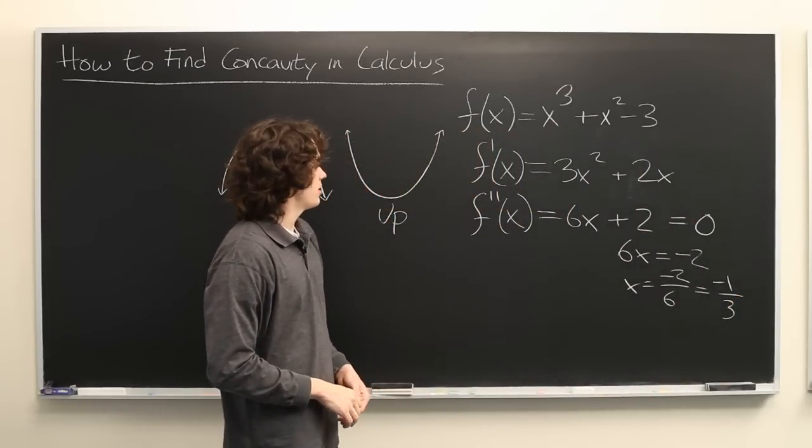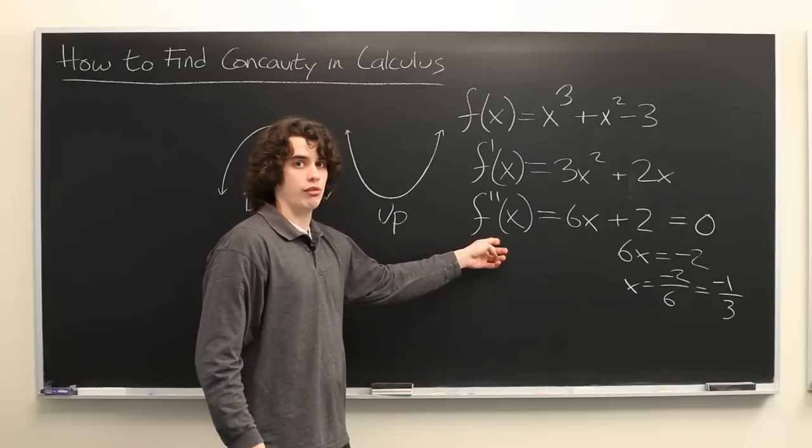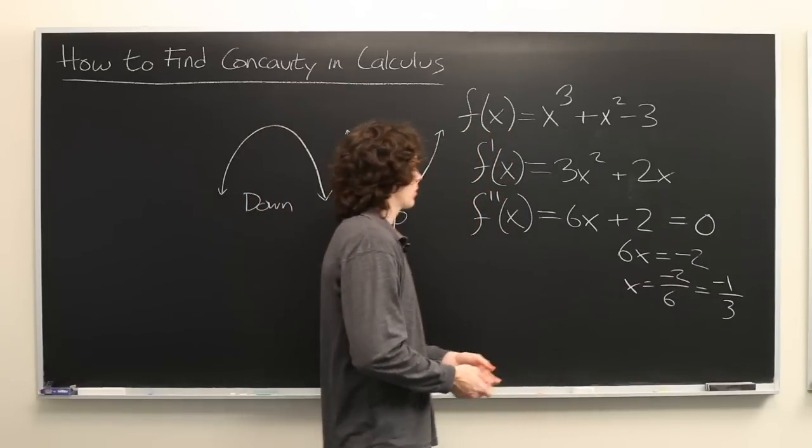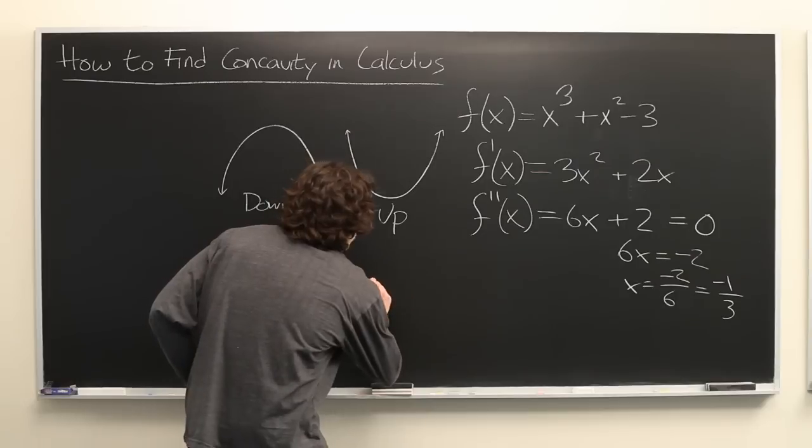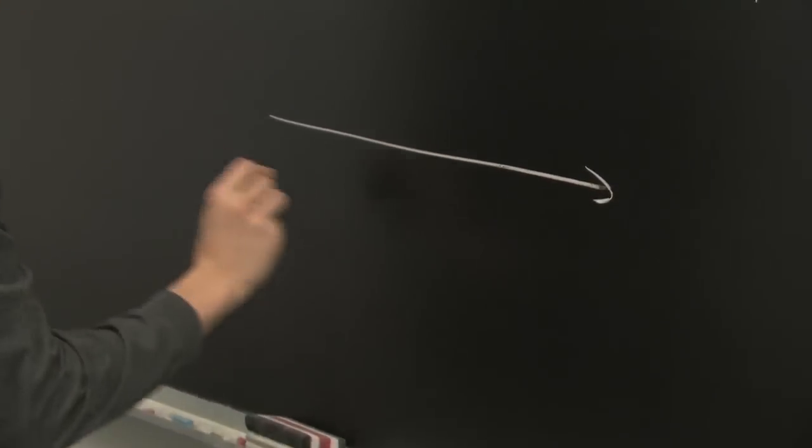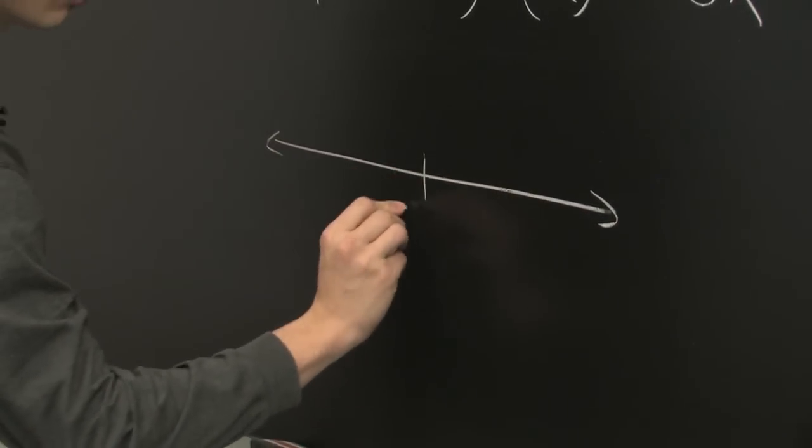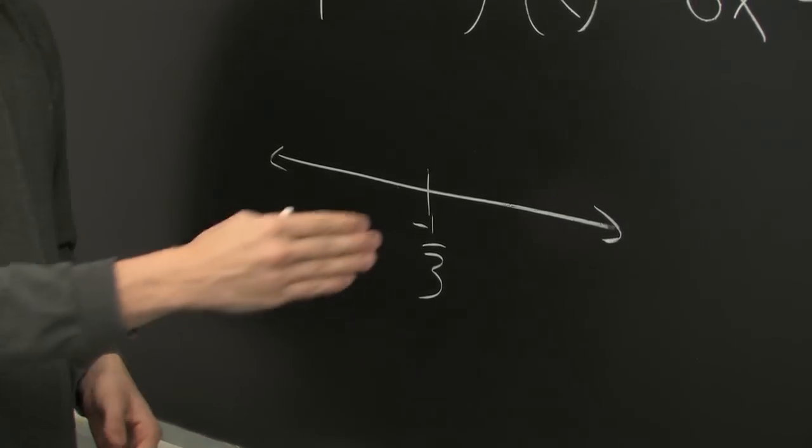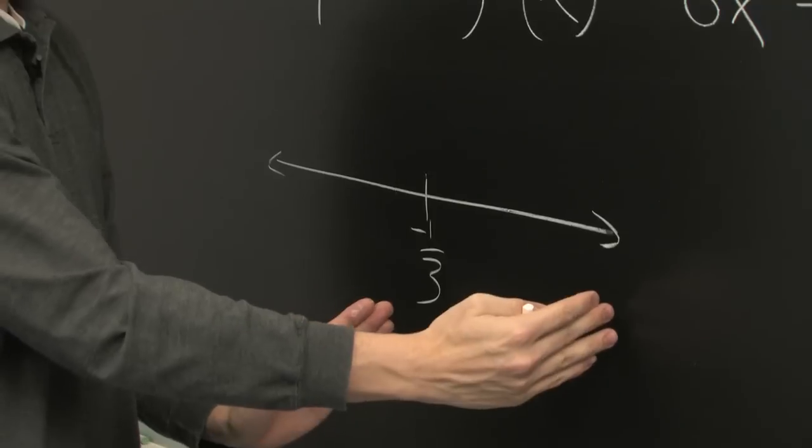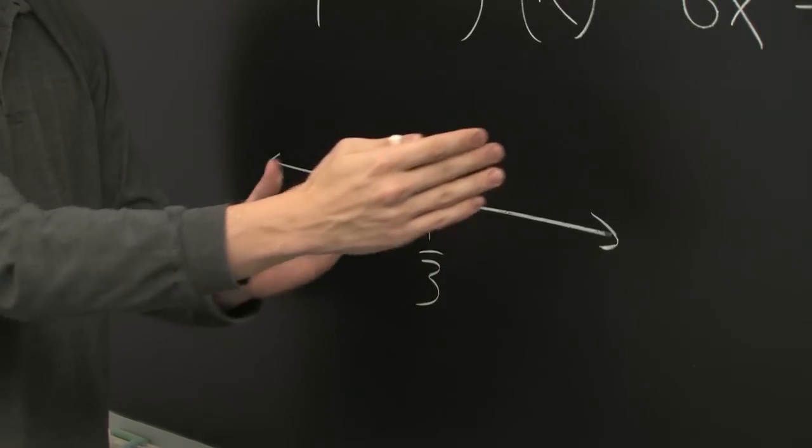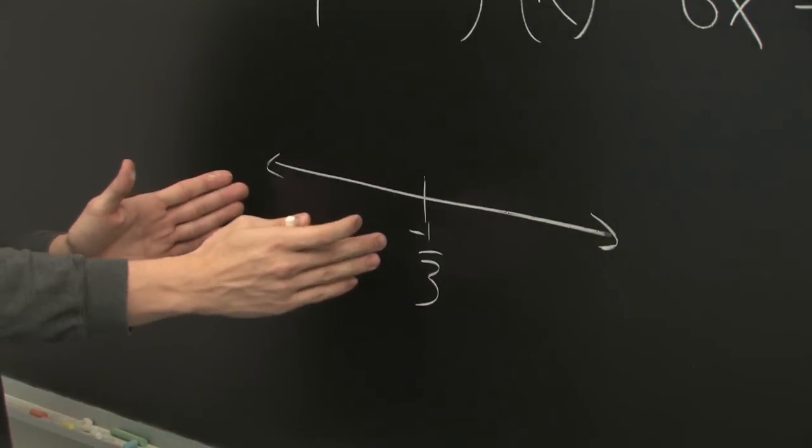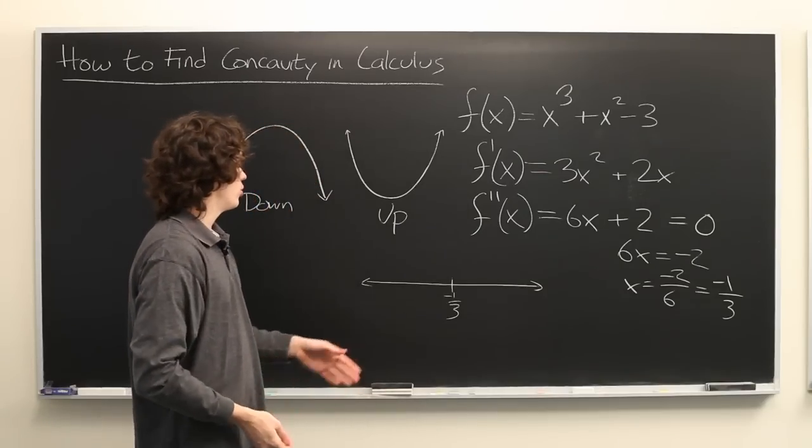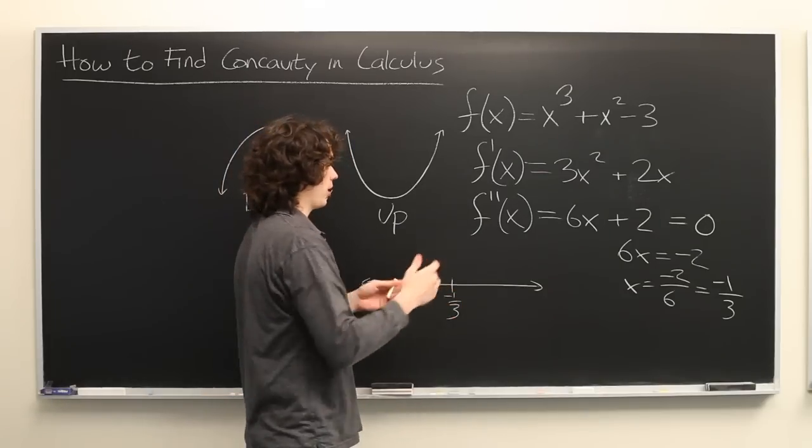So what this tells us is that the second derivative is 0 when x is equal to negative 1 third. So we're going to go ahead and draw a little number line here. This dash represents negative 1 third. So all the points on one side of this point should have the same sign and all of the points on the other side should have the opposite sign. All we need to do is throw in a couple test values to figure out which is which.